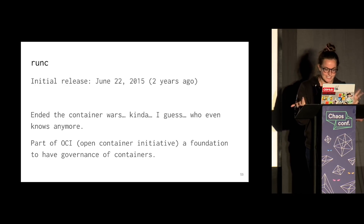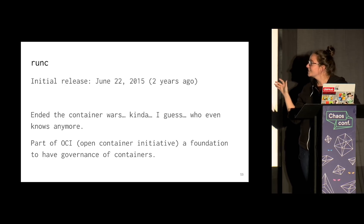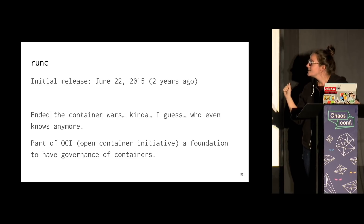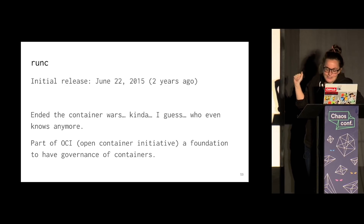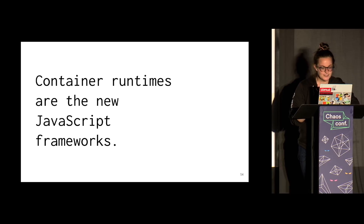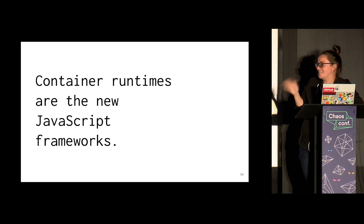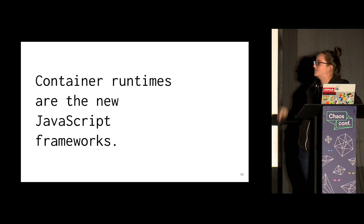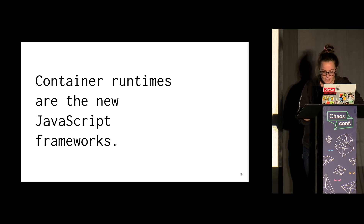Docker released runc, which was essentially libcontainer with a binary. Libcontainer actually always had a binary called NS init. This was supposed to be a reaction to Rocket or whatever, but it's honestly what everyone uses today. There's a bajillion more container runtimes now — I literally lost track. My timeline for container runtimes kind of ended that day. People also define 'runtime' differently now because there are so many layers of software.